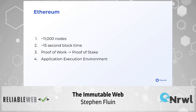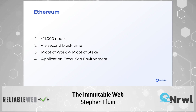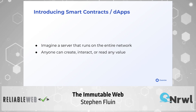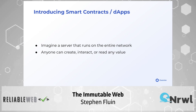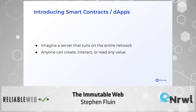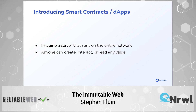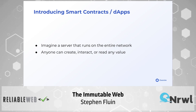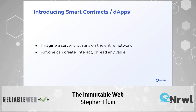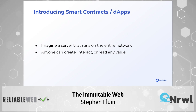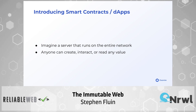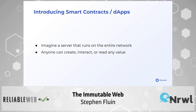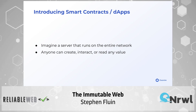Ethereum ends up being an application execution environment — you can actually run code on the Ethereum network. This is where we introduce smart contracts, or decentralized apps (dApps). Think about the execution environment on the blockchain as a server that runs on the entire network. Every single one of those 11,000 nodes is executing all the contracts and transactions that get submitted, just like monetary transfers. Anyone can create, interact with, and read any value in the network.